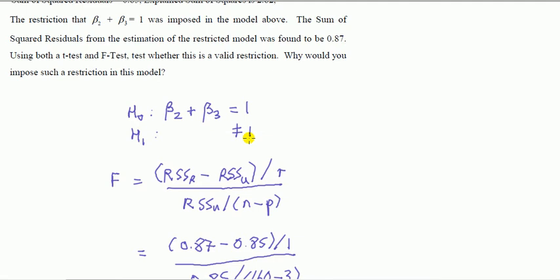Now the idea is to compare the residual sum of squares between the two models where the restriction holds and where it doesn't hold. So we estimate two models. We need two residual sum of squares: one for the model where we just estimated without imposing the restriction, and one where we impose the null hypothesis.